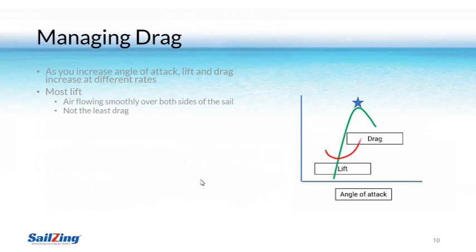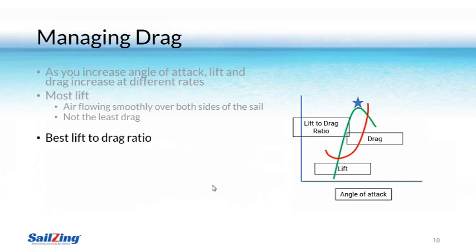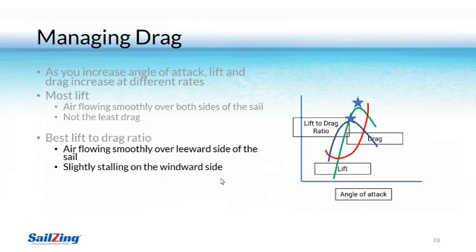However, when we look at drag, the most lift doesn't come with the least amount of drag. Note how the drag increases slowly at first, then increases rapidly as you approach the stall point. So where's the sweet spot? To find this, we can look at the ratio of lift to drag — in non-mathematical terms, we're looking for the most lift for the least drag. The sweet spot is where the sail is sheeted in enough to have air flowing smoothly on the leeward side, but not quite far enough that it is completely smooth on the windward side. This is the most efficient balancing of lift and drag.